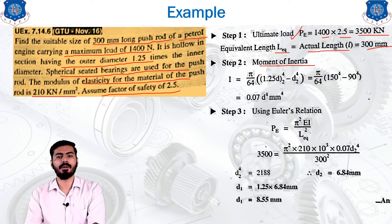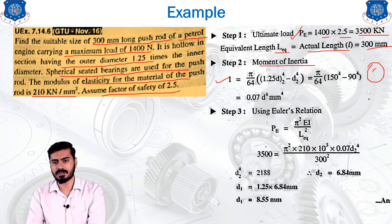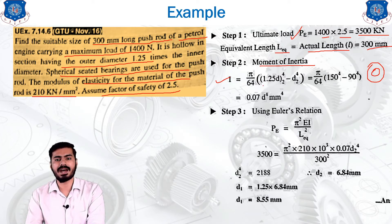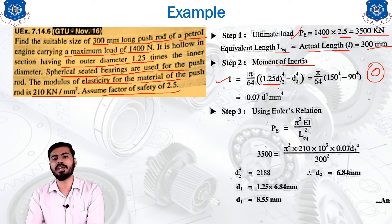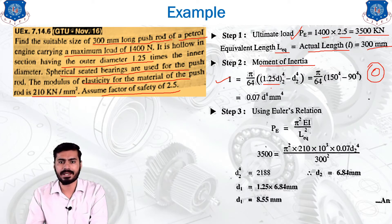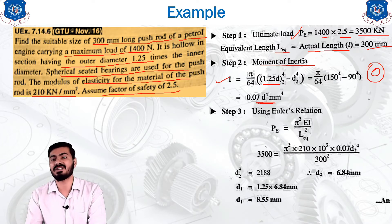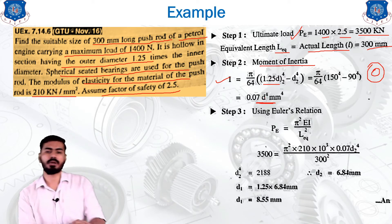Step number 2 is to find the moment of inertia. For the hollow cross section, the moment of inertia is pi/64 times (outer diameter^4 minus inner diameter^4). Since the outer diameter is 1.25 times d, we substitute that empirical relation from the given data. After substituting the values into this equation, you will get the answer in terms of d^4, since the diameter is still unknown.